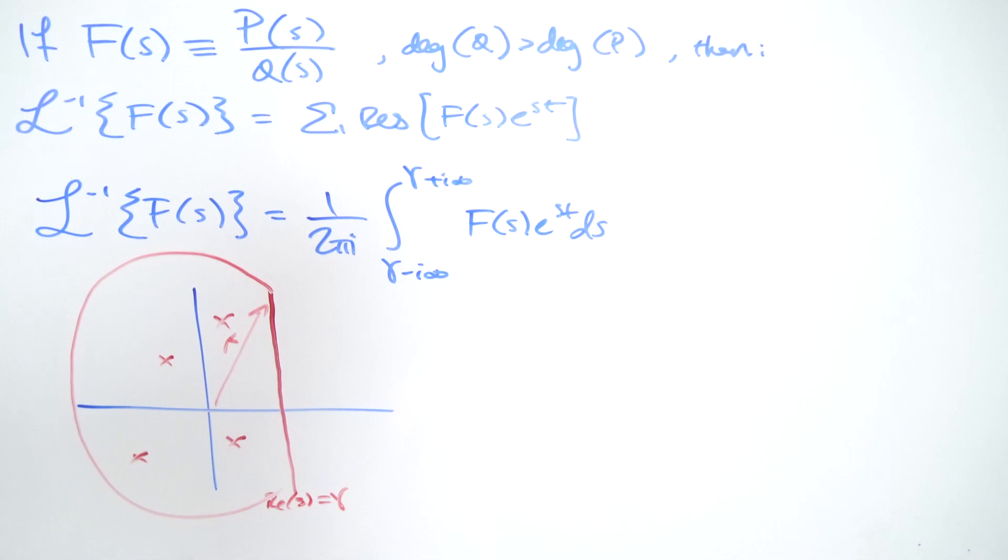And as R approaches infinity, what actually happens is that the integral over this path approaches zero. I've shown in my previous video that if you take the limit as R approaches infinity on this path over Γ,